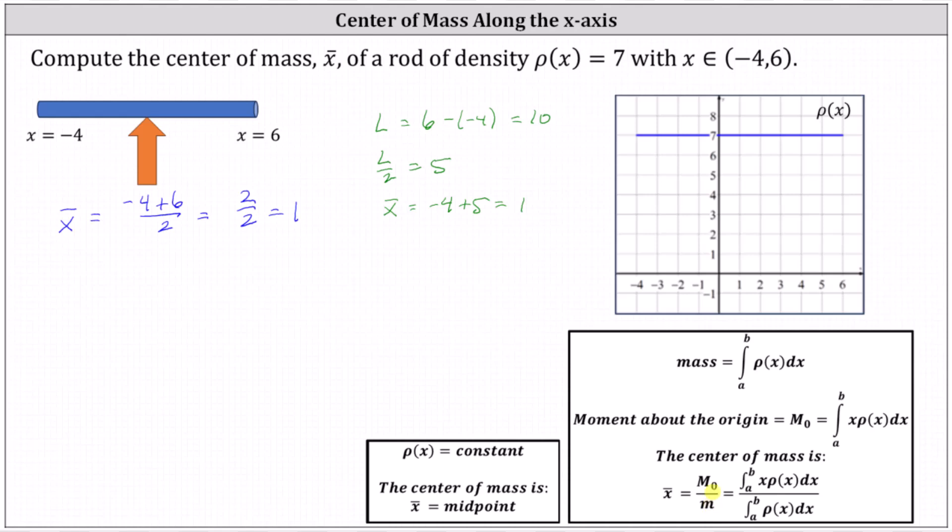Where the moment about the origin is equal to the integral from a to b of x times rho of x dx and the mass equals the integral from a to b of rho of x dx. Let's show we get the same result using this formula as well.